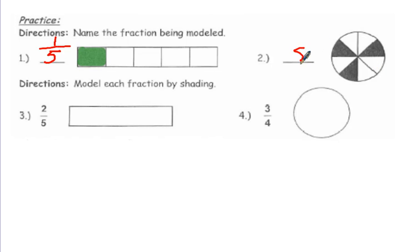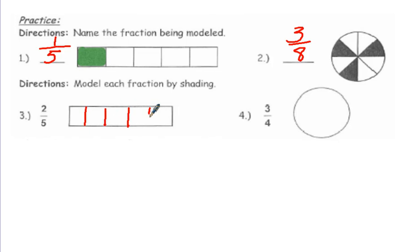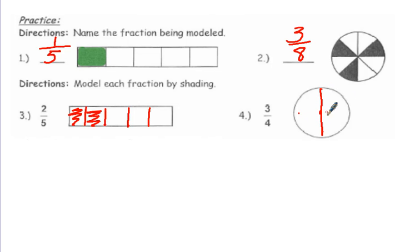There are 8 sections, 3 of which are shaded, so 3 eighths. Now draw your own model by shading fifths. Fifths are a little hard to draw, so you just have to estimate them — 5 equal sections, and shade in 2 out of the 5. For fourths on a circle, always put a dot in the middle first to help you be a little more even.